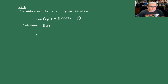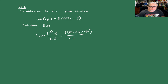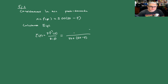Entonces, la elasticidad es p·f'(p) sobre f(p). Tenemos p por 500·(−1) en el numerador, sobre 500·(20 − p) en el denominador. El 500 se cancela y nos queda p sobre (20 − p).